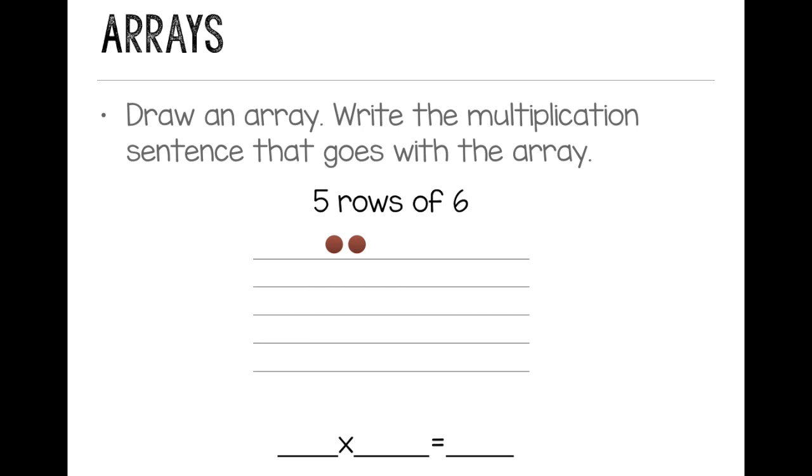And then I want to put 6 objects in each row. 1, 2, 3, 4, 5, 6. And I want to repeat this for each row in my array.